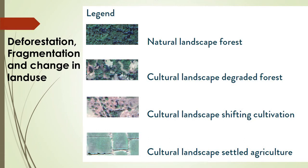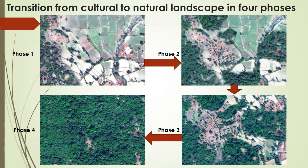This simulates deforestation where fragmentation and change in land use has occurred: a natural landscape becomes a semi-cultural landscape with degraded forest, then further degraded into illegal cultivation, then into agriculture. Our attempt in eco-restoration is to run this in reverse - step by step through four stages, taking an illegally encroached area back to 80% canopy cover. This may take many years depending on the type of forest.